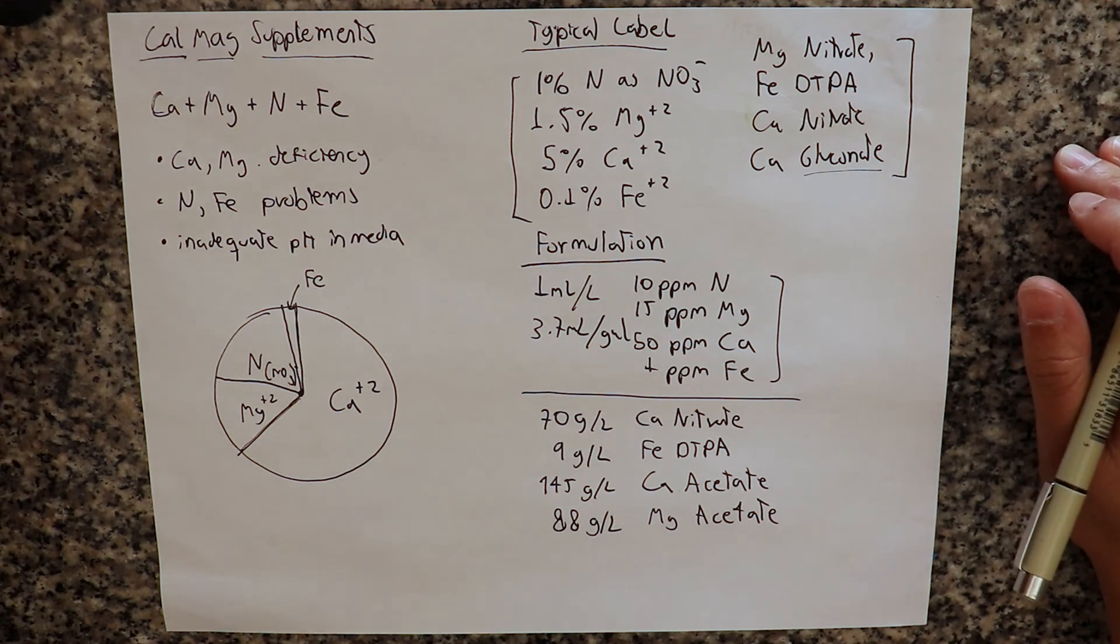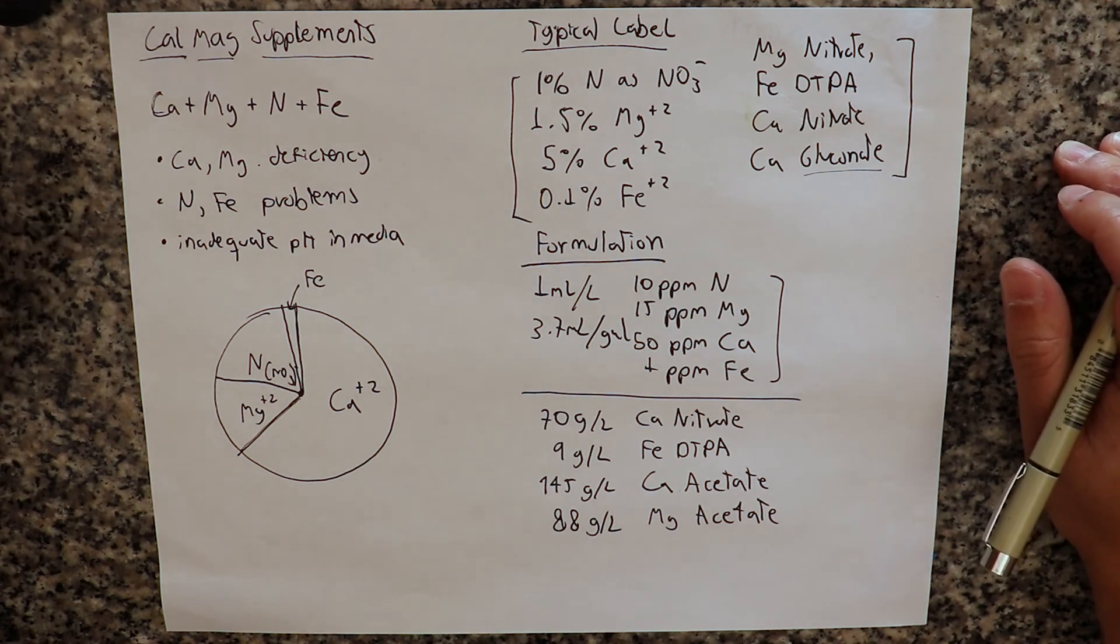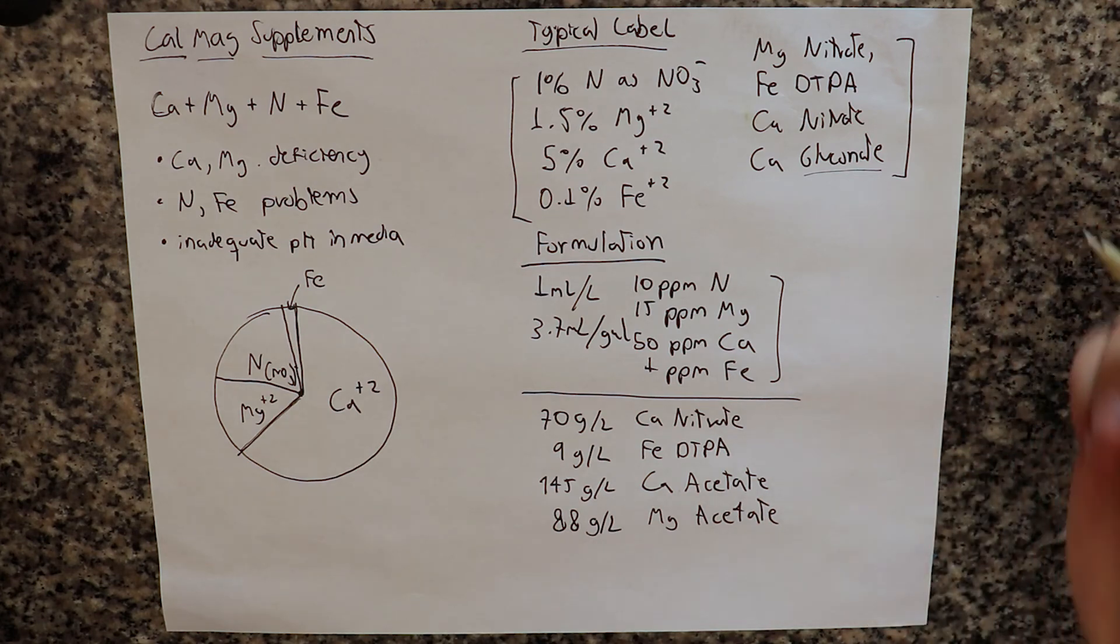But just the fact that we're adding a supplement that has a strong cation to anion imbalance from the point of plant uptake causes this effect. I hope this video showed you how you can prepare a CalMag supplement using some readily available salts.